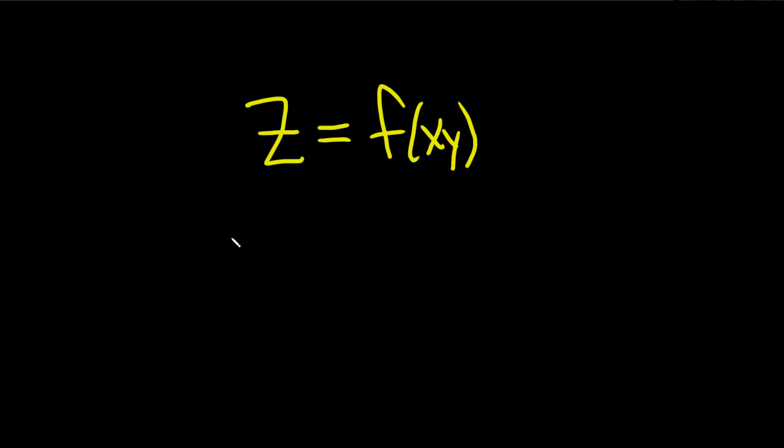We have a function z equals f of x times y and we're going to find two things. We're going to find the partial of z with respect to x and we're going to find the partial of z with respect to y.